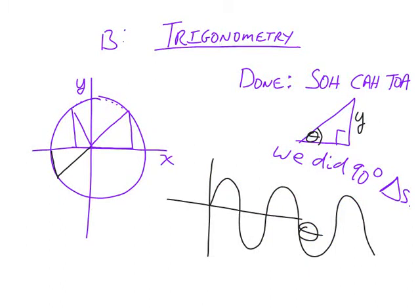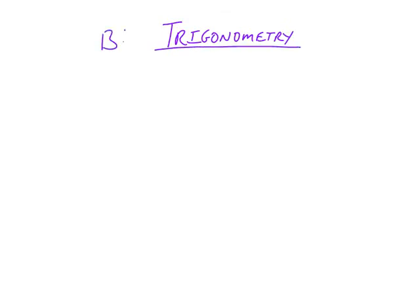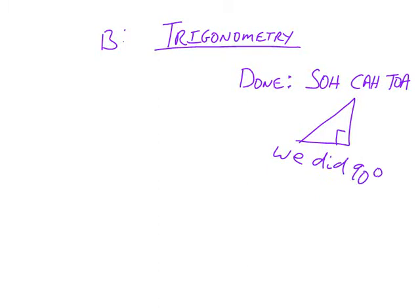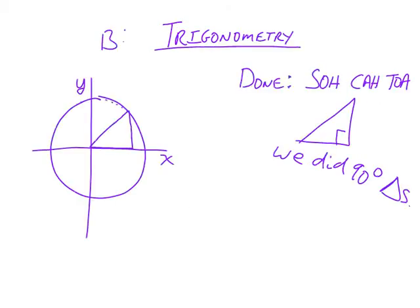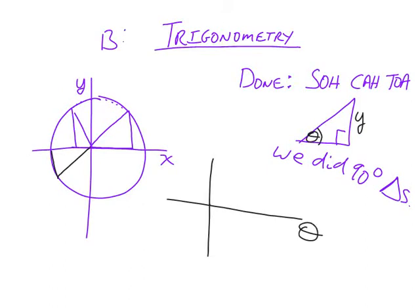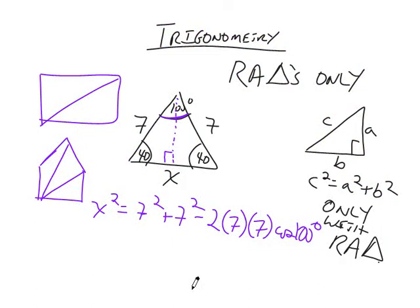We're also going to learn about trigonometry. The trig we've studied in grades 9 and 10 always involved right angle triangles, but it turns out the best way to look at trigonometry is actually by looking at circles. When you graph going around the circle, it looks like that wave at the bottom.